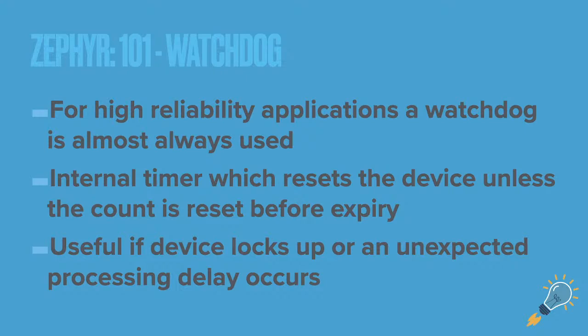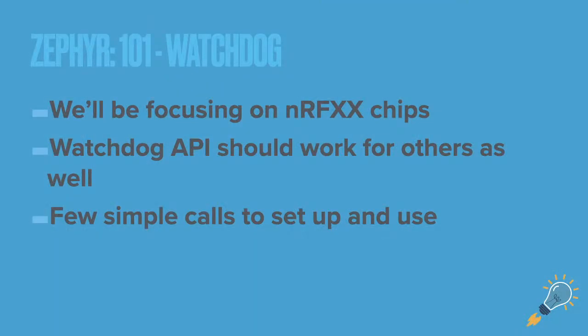For your own project, if you're very concerned about reliability — like tracking applications where you don't want it to lock up and lose data — the watchdog is important. We'll focus mainly on the nRF9160 and nRF52 chips. All nRF chips have a watchdog timer, so you don't need any external parts; it's all internal, and the watchdog API support is there for these chips.